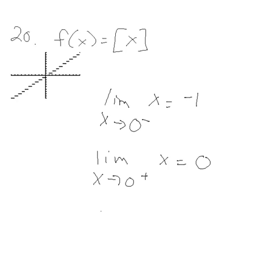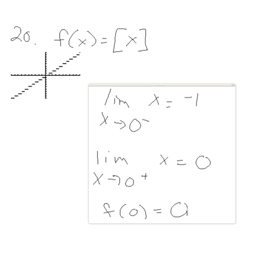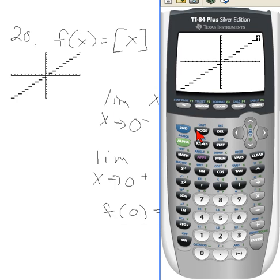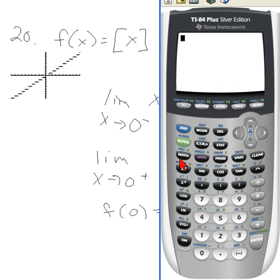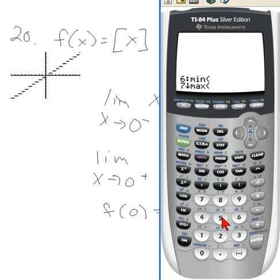And the function value, f at 0, is actually 0. And you can verify that with your calculator. If you come in here and just do math, and then over to num, and then choice 5 for 0, you will get 0.